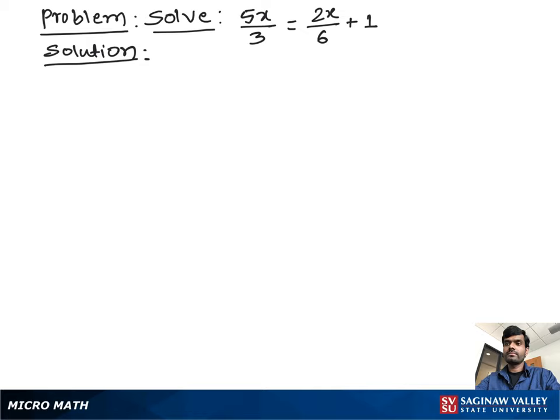Solve 5x over 3 equal to 2x over 6 plus 1. Let's write the problem one more time: 5x over 3 equal to 2x over 6 plus 1.